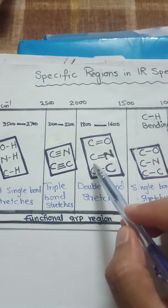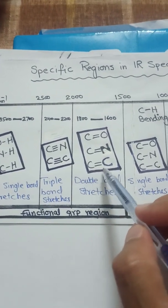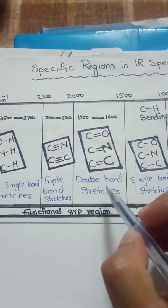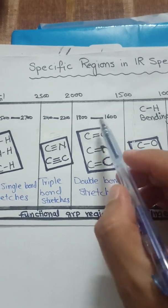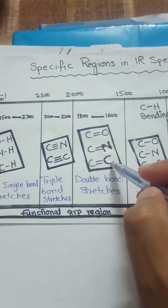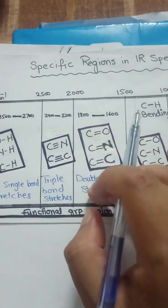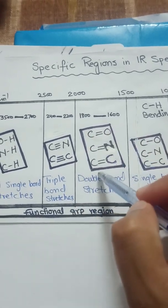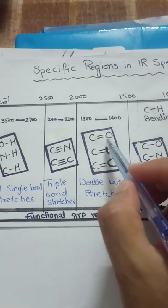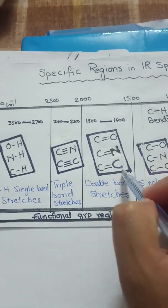Moving from 1500 to 2000 we have carbonyl group stretching vibrations, amide group or C=N, and alkene C=C stretching vibrations — these are the double bond stretching vibrations. More specifically it is from 1600 to 1800 per centimeter. The absorption frequency decreases as we go from C=O to C=C, because C=O has a higher absorption frequency due to the electronegativity difference between carbon and oxygen compared to nitrogen and carbon.